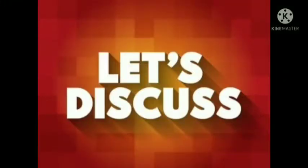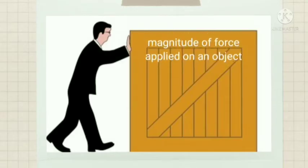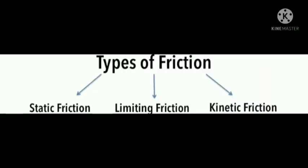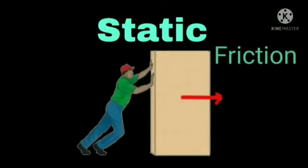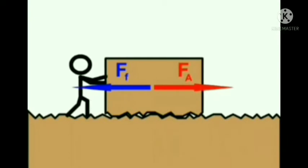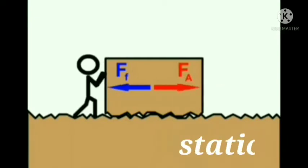Let us discuss the types of friction. Depending upon the nature of surfaces and the magnitude of force applied on an object, the force of friction is of three types. First is static friction. The maximum frictional force present between any two objects when one object just tends to move or slip over the surface of the other object is called static friction.